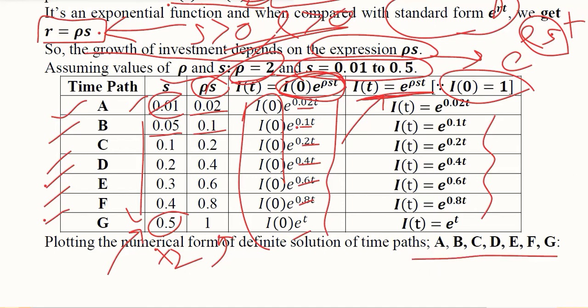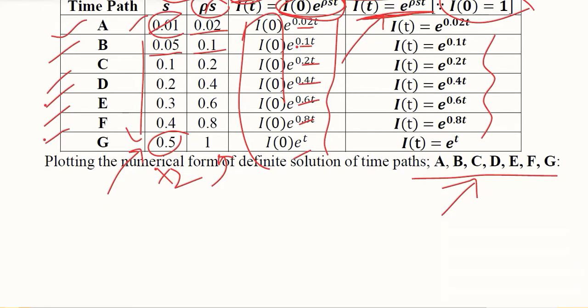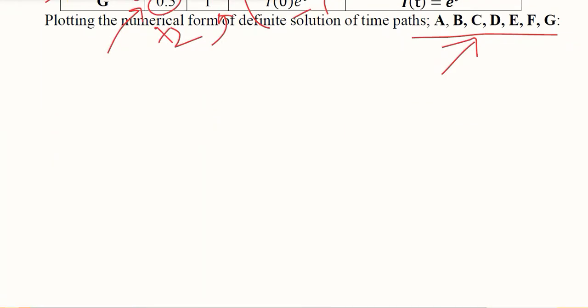There are now seven time paths depending upon the various values of s that we can plot graphically and observe how the investment time path will look like.